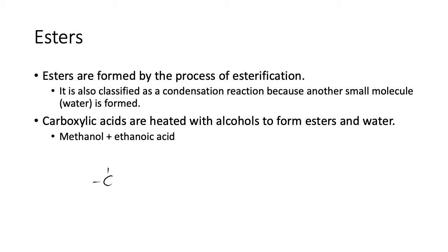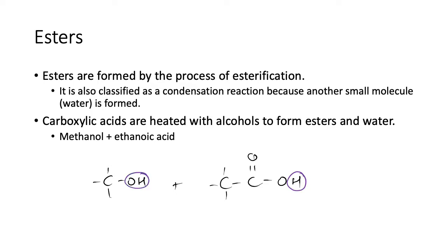So we have methanol — nice and easy — and ethanoic acid — nice and easy. What's going to happen is you put these two together and they form the ester. In doing so, you need to make a water molecule, so you remove that hydrogen and that hydrogen and oxygen there, and they come together to form a water molecule, H₂O.